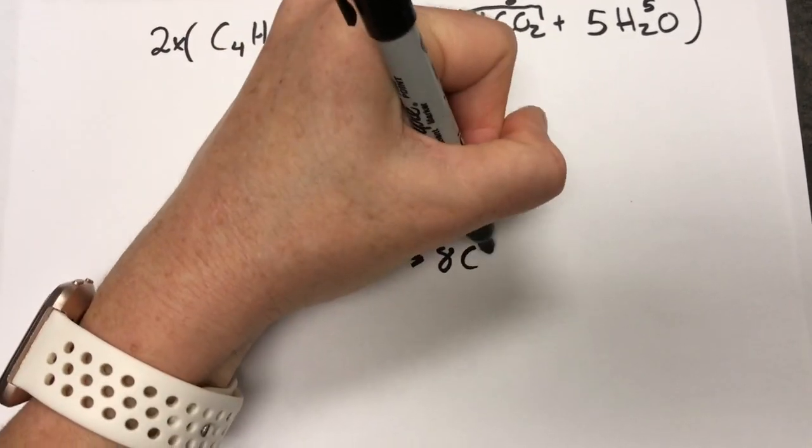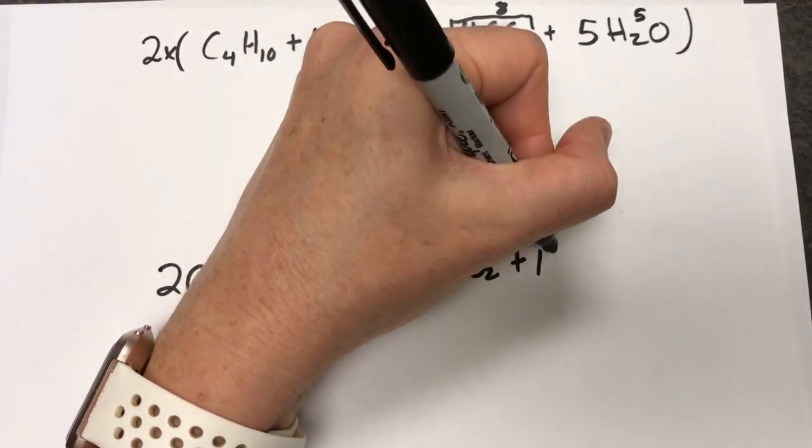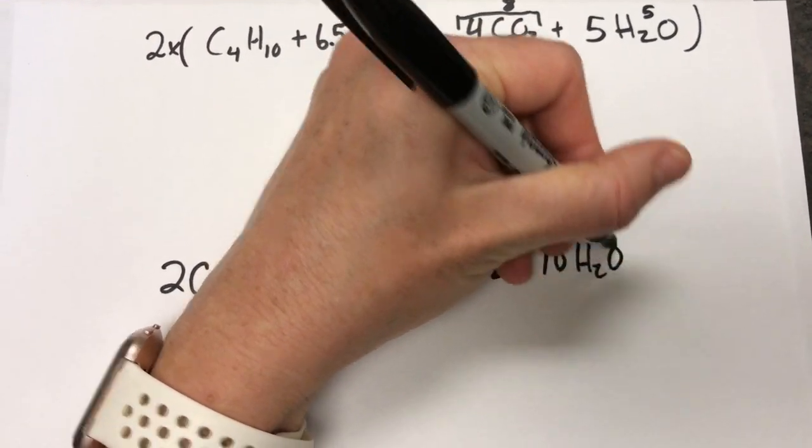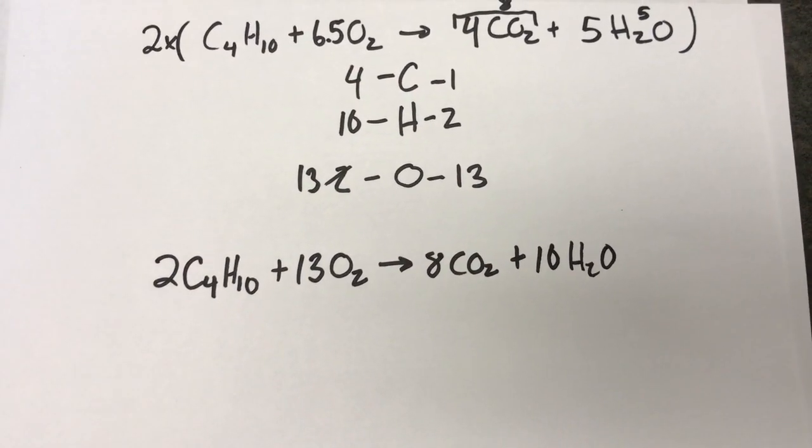yielding 8 CO2 and 10 waters. And now we have whole numbers, everything's balanced. If you were to go through and look at this we'd have the appropriate number of everything.